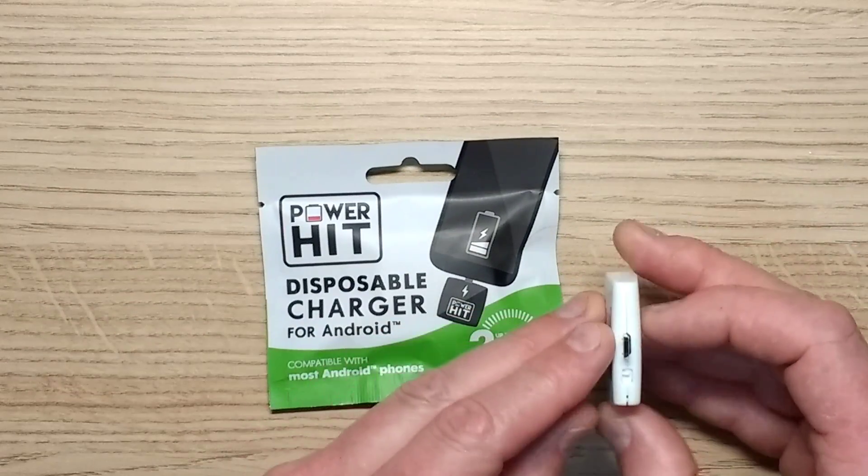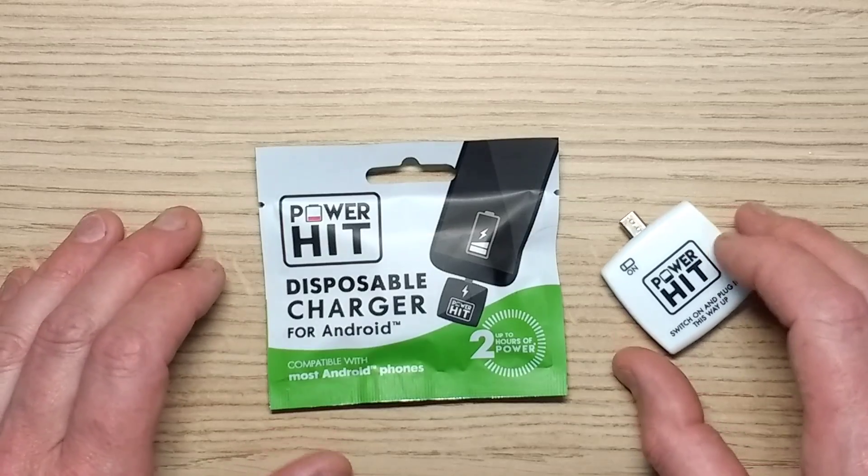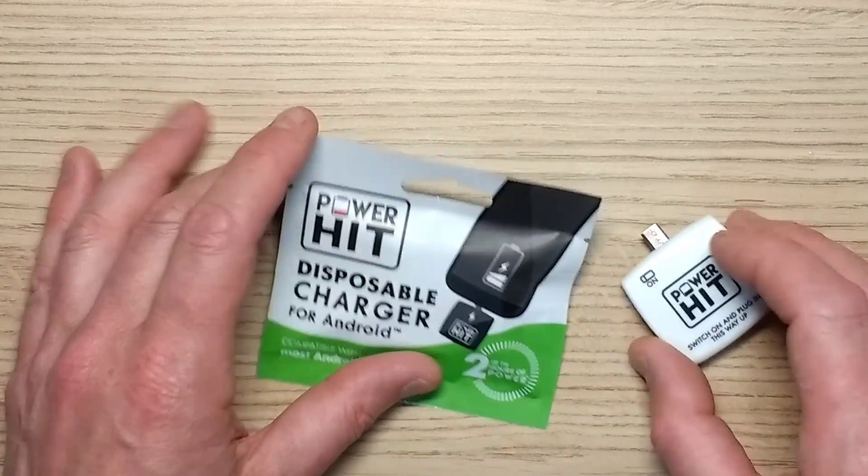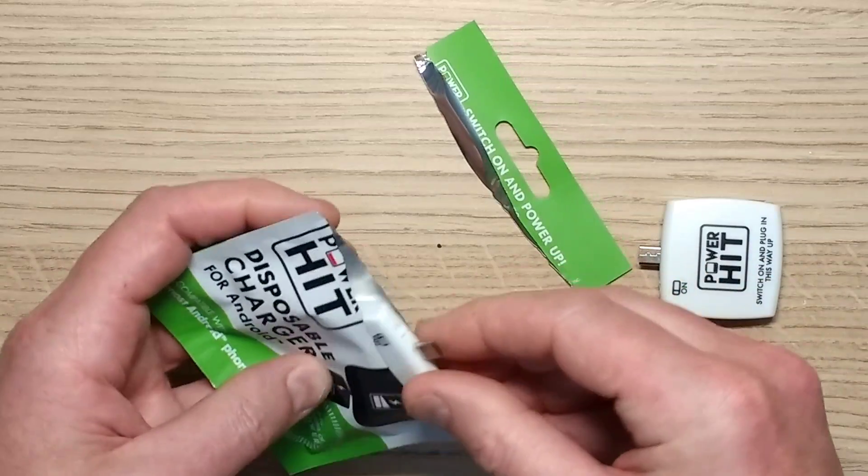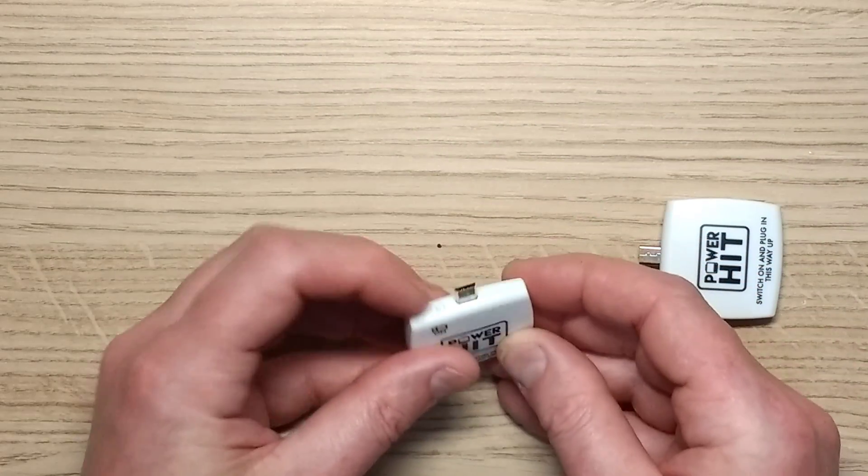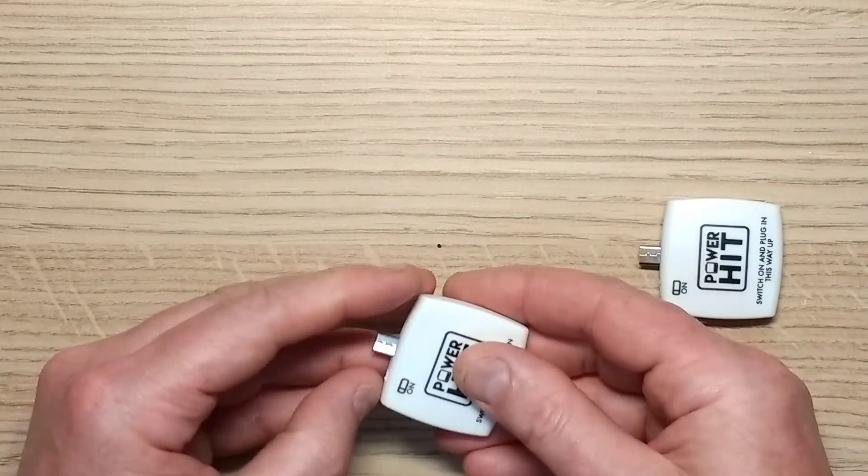The Android version has a micro USB connector. The Apple has the proprietary Apple connector on it. And the idea is that when you buy this for about £3, you simply take it out of the packet, turn it on, plug it into your phone.